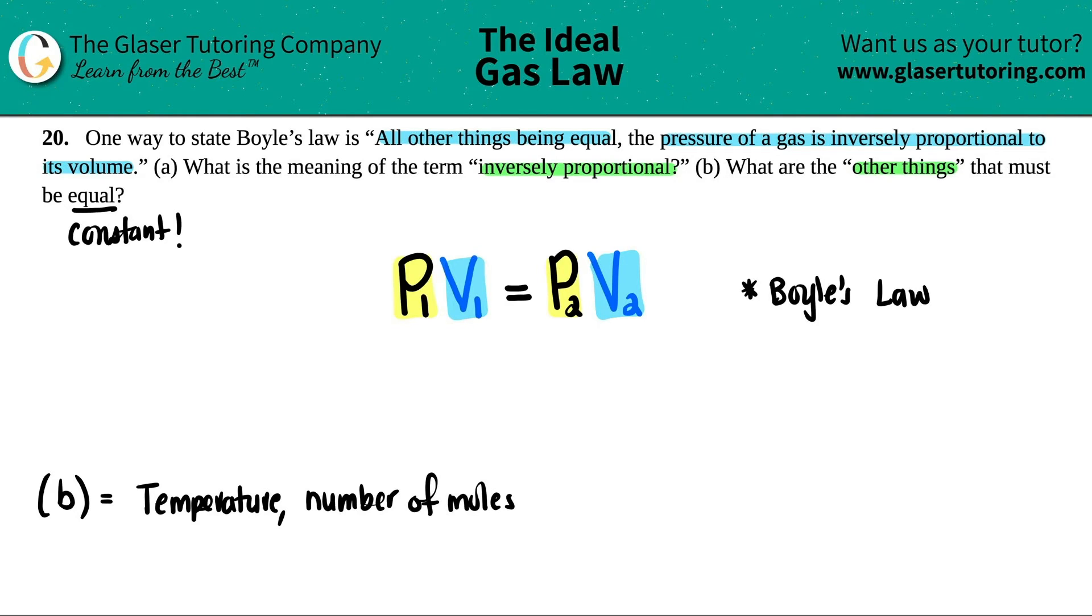So Boyle's law just talks about the relationship between P₁V₁ and P₂V₂, or just pressure and volume. Now they're already telling us that this relationship is an inverse proportional relationship or an indirect relationship. It doesn't matter, we'll just say that this is inversely proportional, aka indirect.